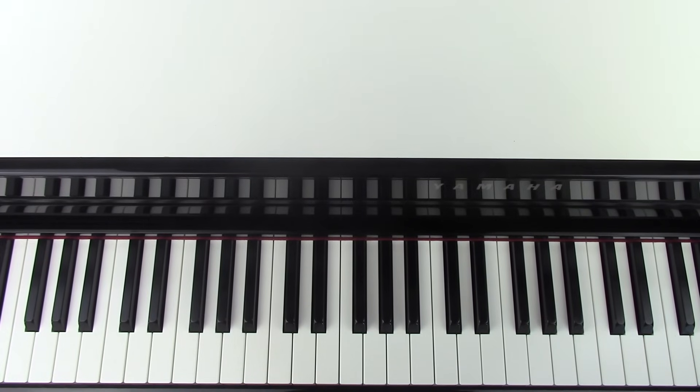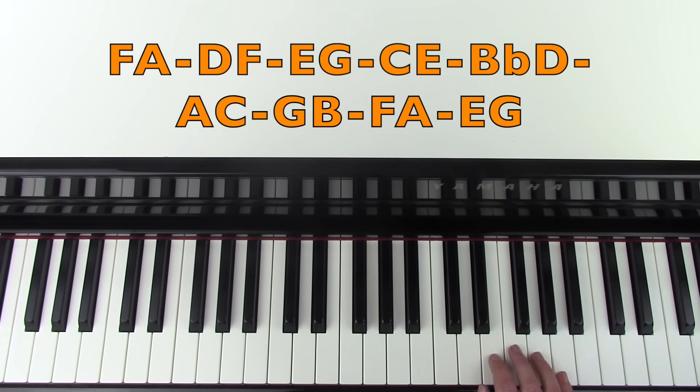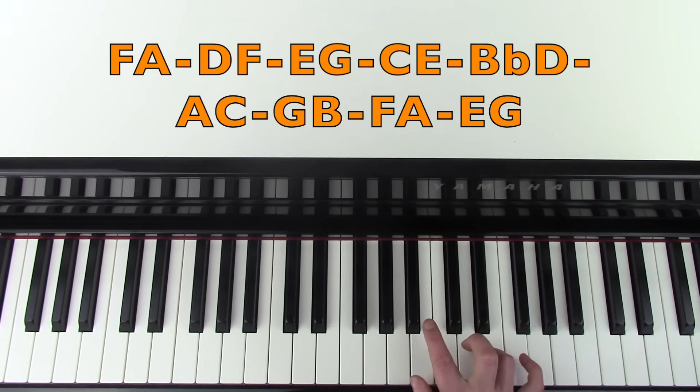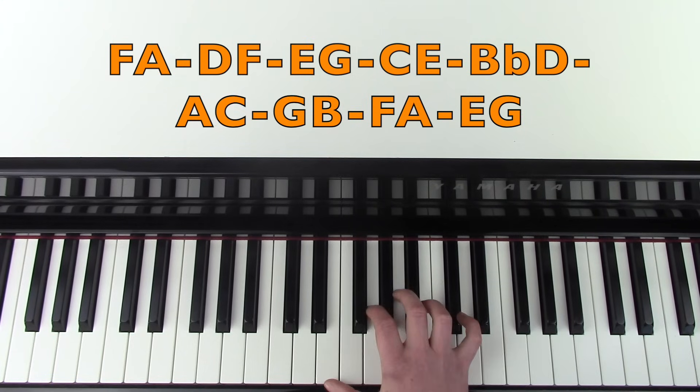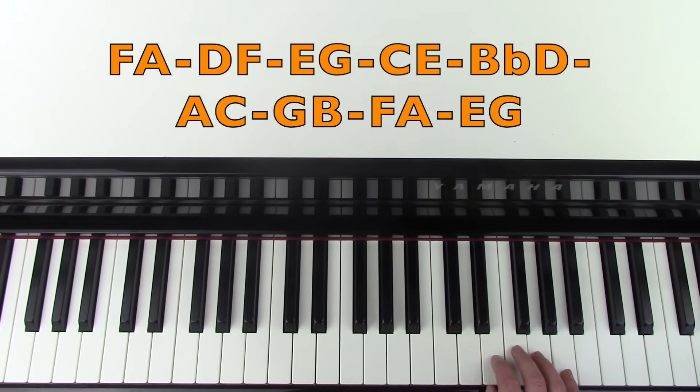There's only one more part left to do, which makes the outro and is also part of the middle eight section, which comes straight after the second chorus. It's like an extension of this part. You're going to just keep going down in thirds. The next one after that would be B flat and D, A and C, G and B, F and A, and then E and G. I'll do that again.